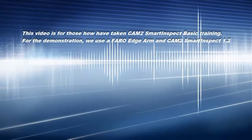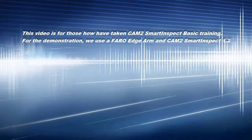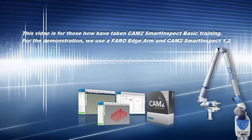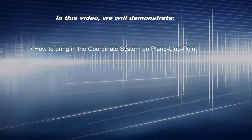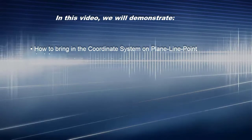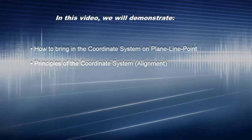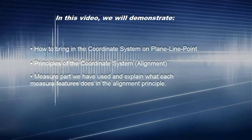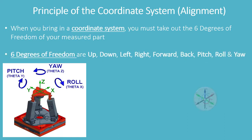This video is for those who have taken CAM2 Smart Inspect basic training. For the demonstration, we use a Ferro Edge Arm and CAM2 Smart Inspect 1.2. In this video, we will demonstrate how to bring in the coordinate system on the plane-line-point principle, measure a part, and explain what each measure feature does in the alignment principle.